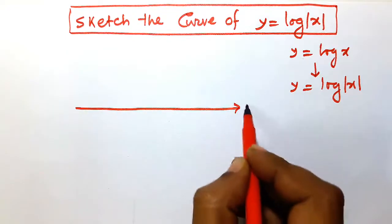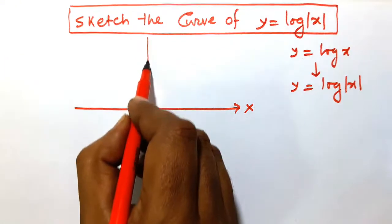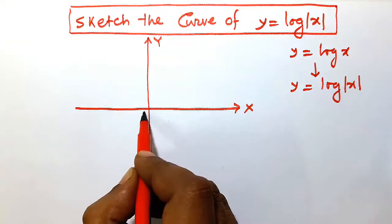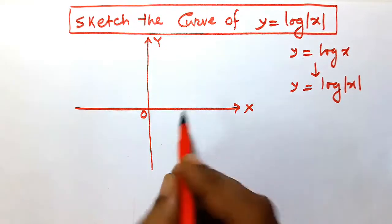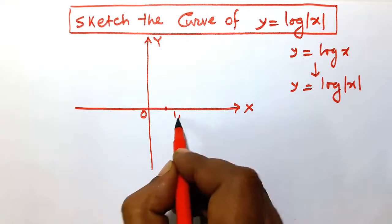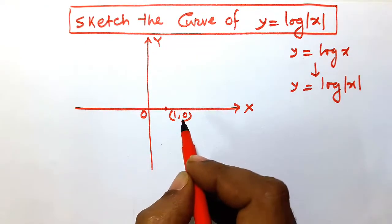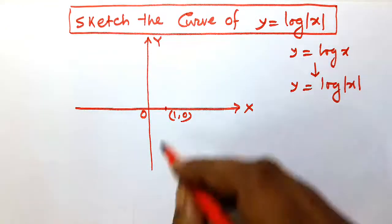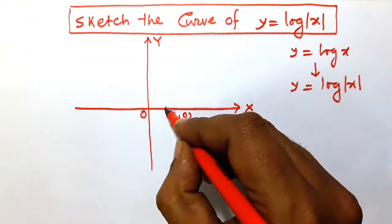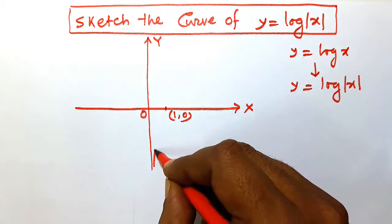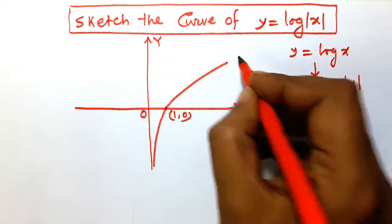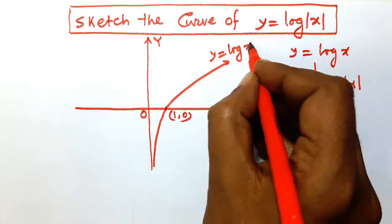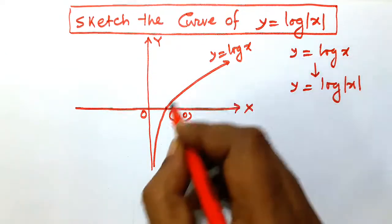This is the x-axis, this is the y-axis, and this is the origin. The point (1, 0) is marked, and the curve for y = log(x) passes through this point.